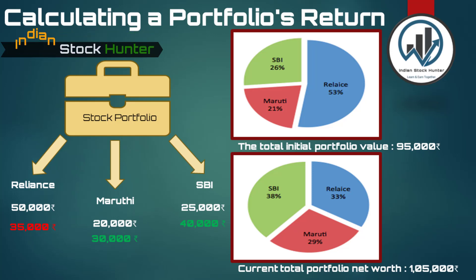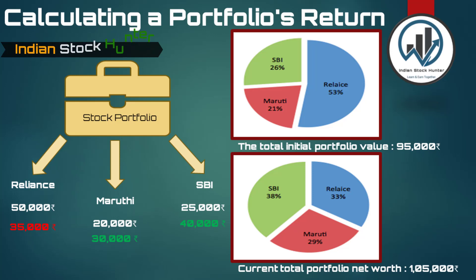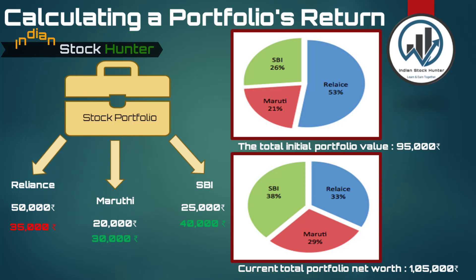We define net worth as the sum of values of all the investments. We can also define it as the amount that Mr. Amrish will receive if he wants to liquidate his investments. Suppose today Mr. Amrish wants to take out all his money — he can sell shares of Reliance and get rupees 35,000, similarly he can get rupees 30,000 and rupees 40,000 by selling all the shares of Maruti and SPI respectively. The total money he can generate by selling all his investments is rupees 1,05,000, which equals the portfolio net worth.